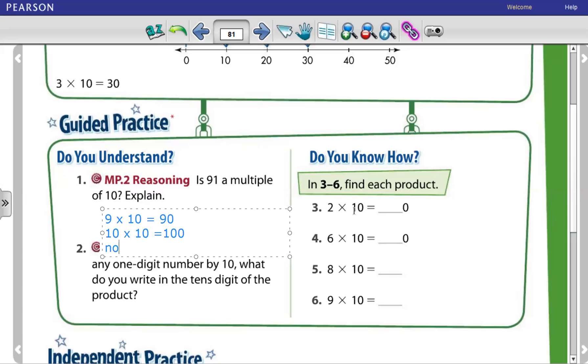Question number 3 to 6, find each product. 2 times 10. 2 times 1, how much? Equals to 2. With the 0, it becomes 20.